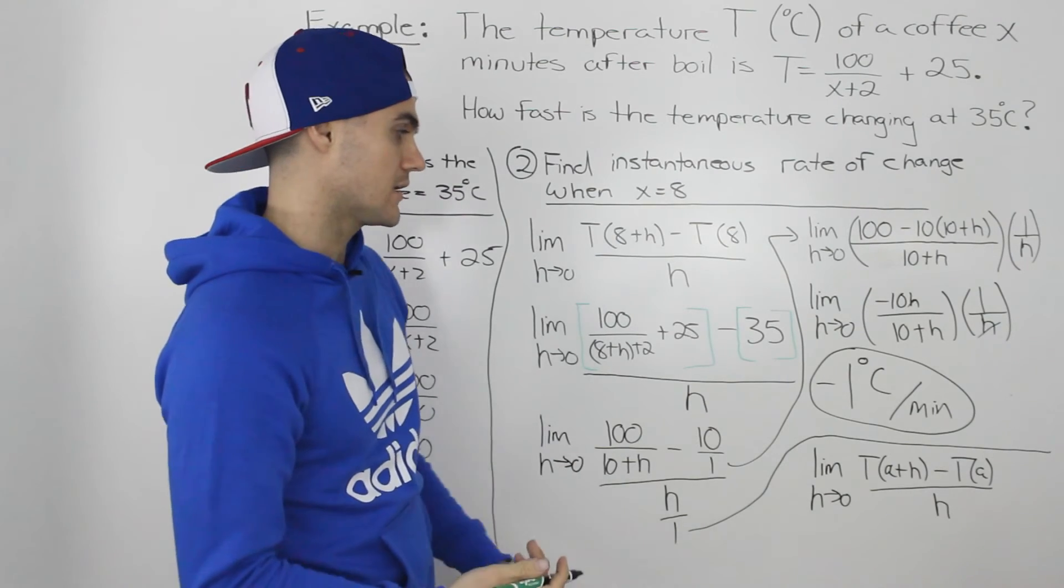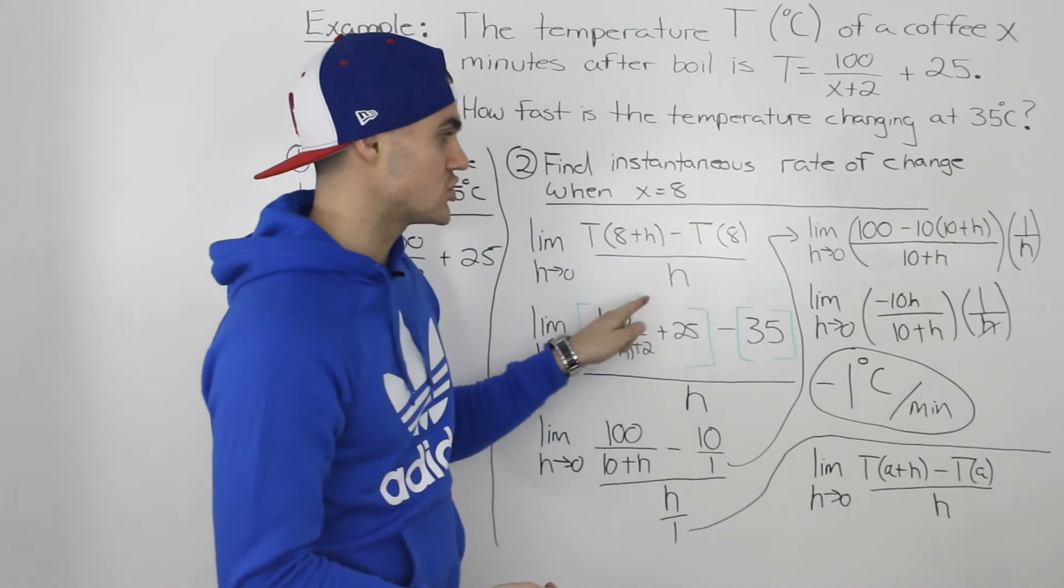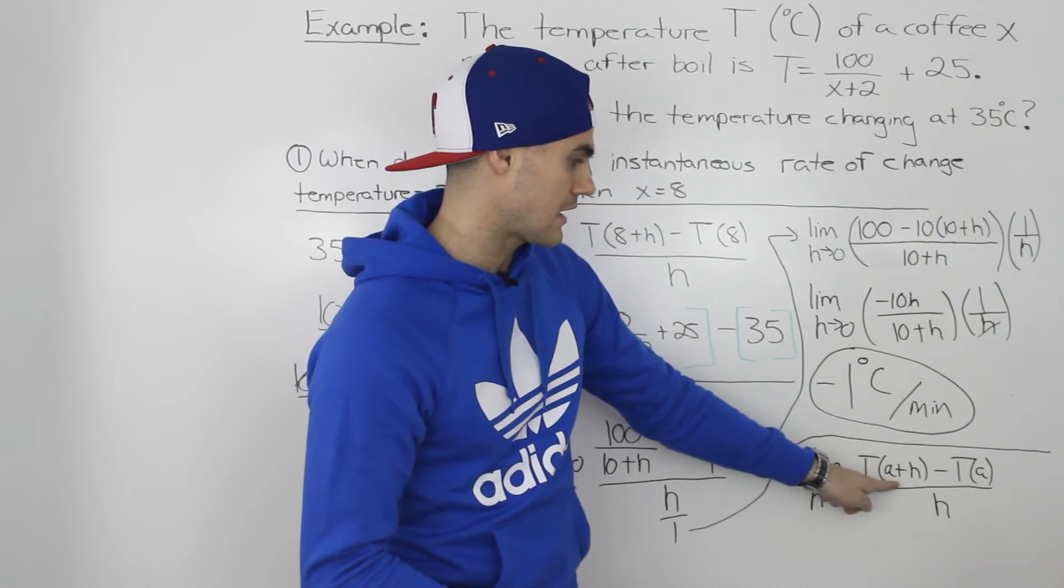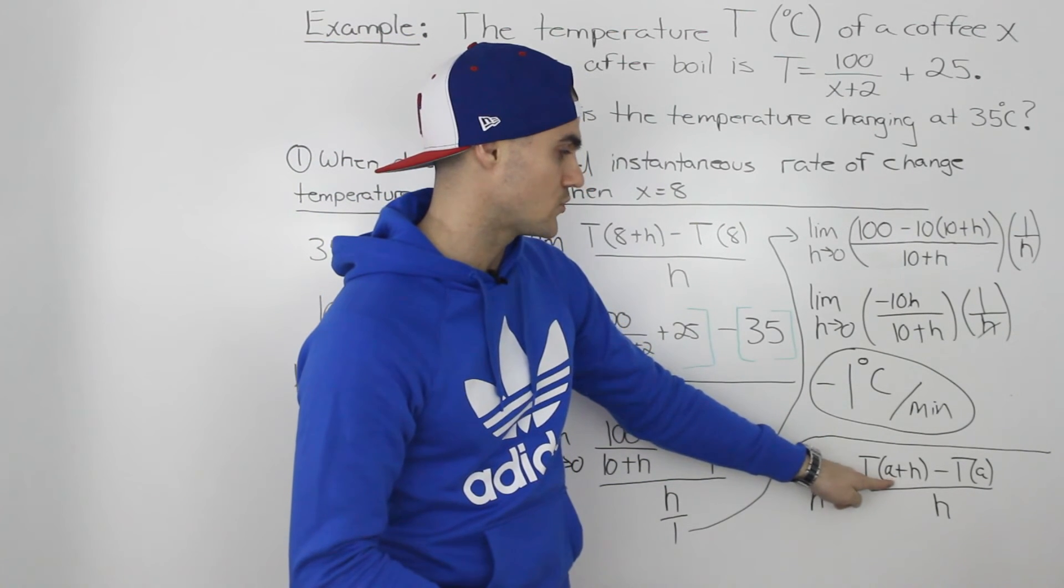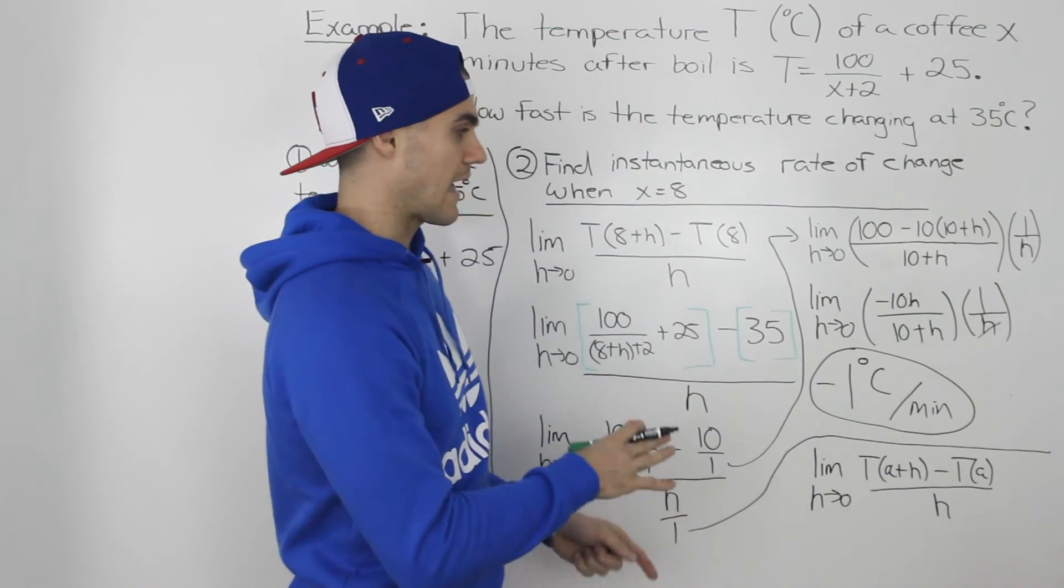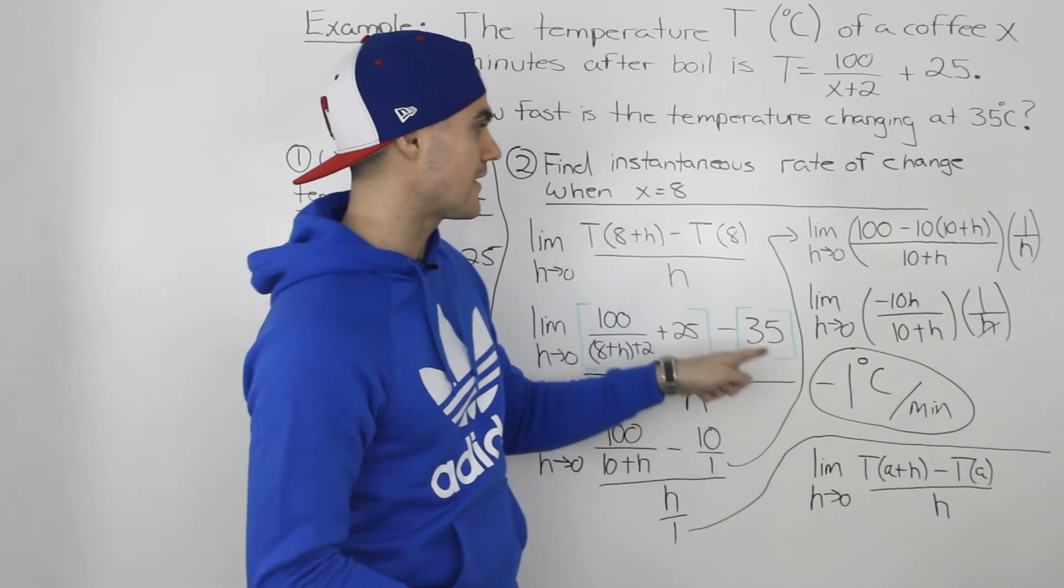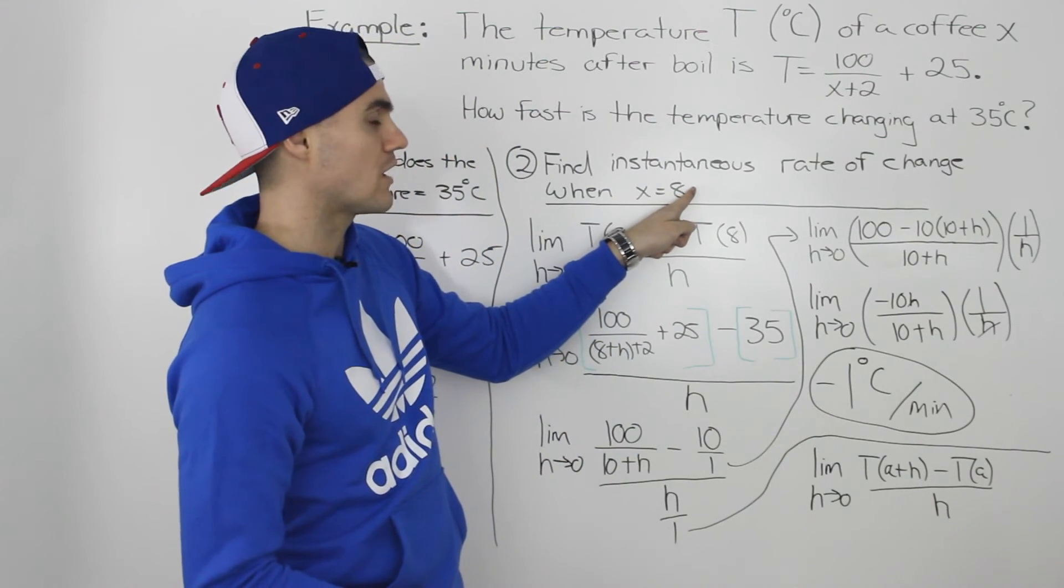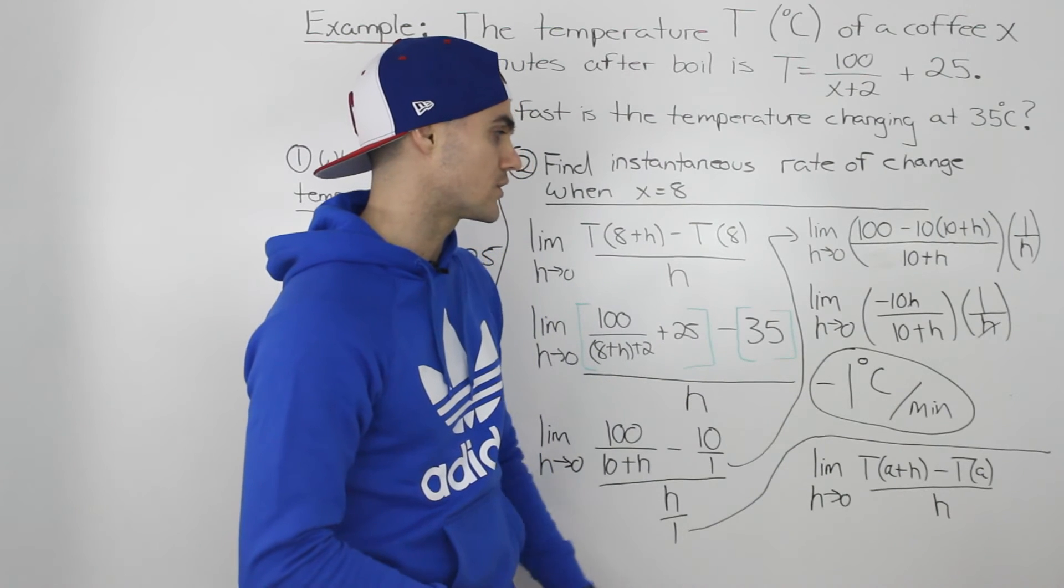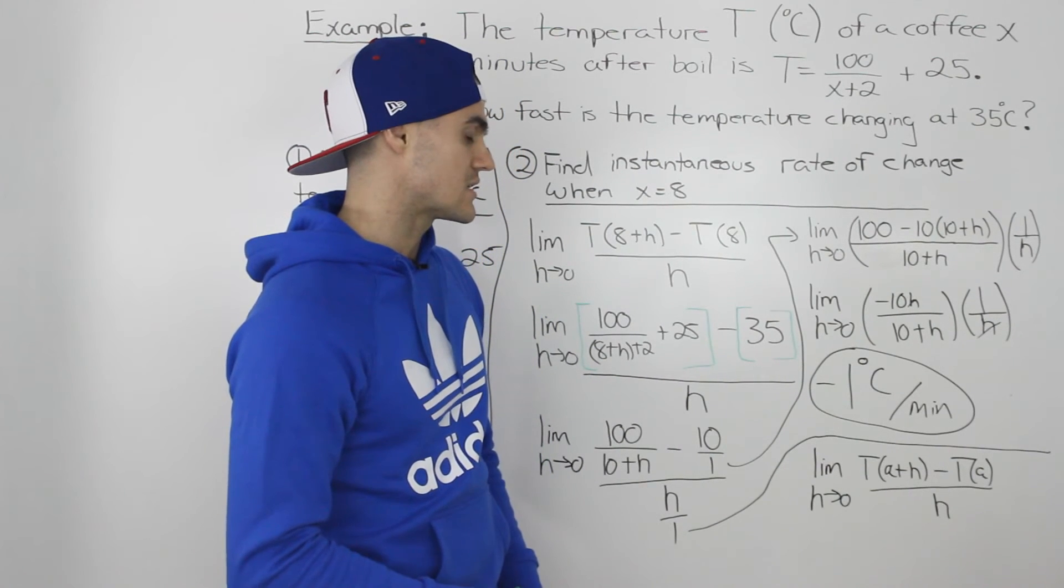However, another way you could have done it is you could have found just a general formula for the rate of change by picking a general value a here. So T of a plus h minus T of a all over h and then getting a general formula and then plugging in that value of 8 in for a, and then you would still get negative 1 degrees Celsius per minute.